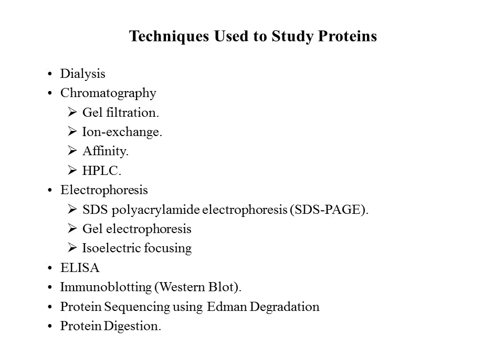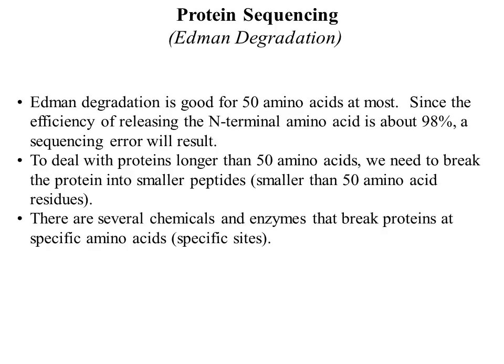We talked about ELISA, and we talked about the western blot, which is also called the immunoblot because it necessitates the use of an antibody that's raised against that protein. We also talked about protein digestion. We mentioned that there are three enzymes that we need to memorize the specificities for.